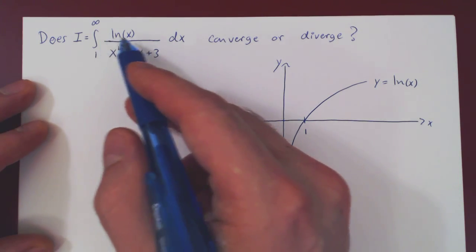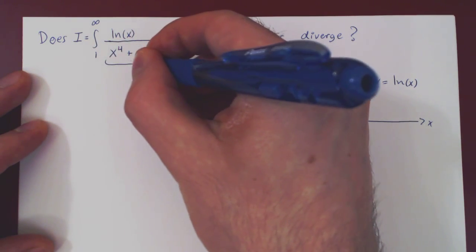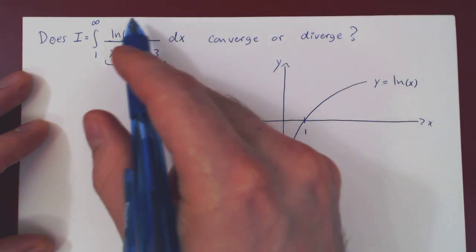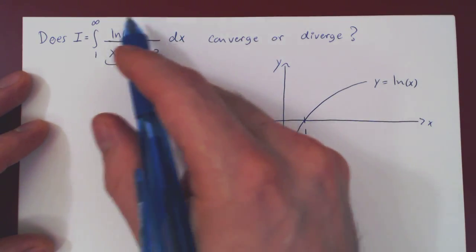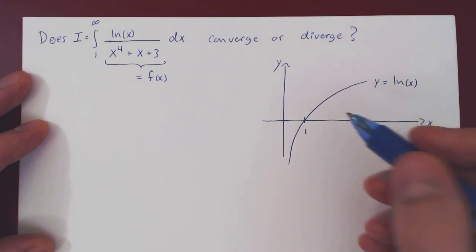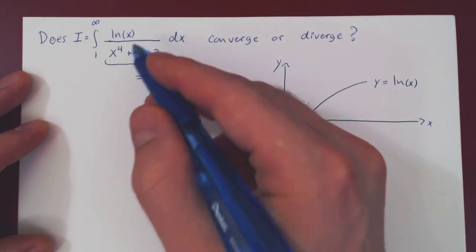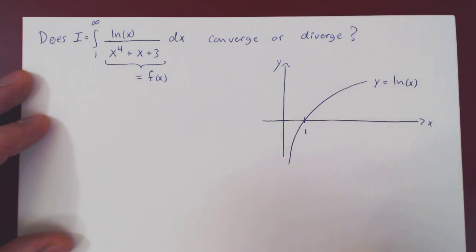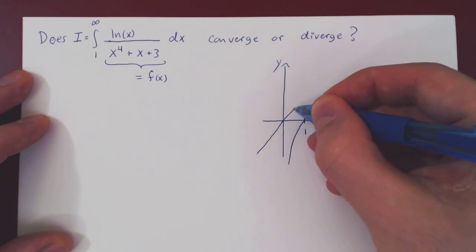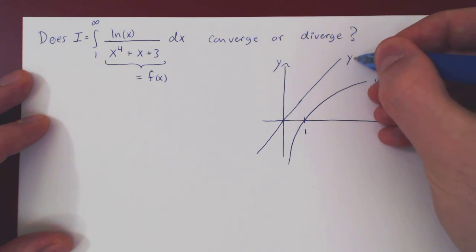The first thing is that ln is rather annoying because it really makes this a rather complicated function. So the first question is, what could we basically replace ln of x by to make this a little simpler? The idea here is to notice quite clearly that y equals x is a bigger function than y equals ln of x.